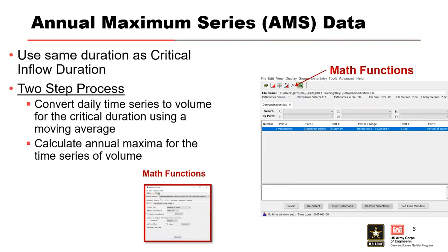This is showing how you get to that tool within HEC-DSS View software. After you come up with your forward moving average data set for your two-day flows, you need to convert it to an annual maximum series, and there's a maximum tool within DSS View that allows you to do that.